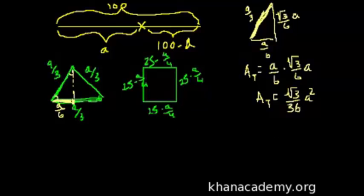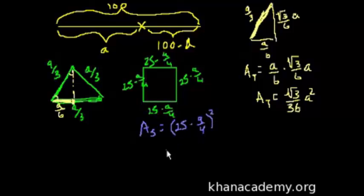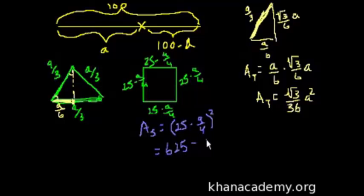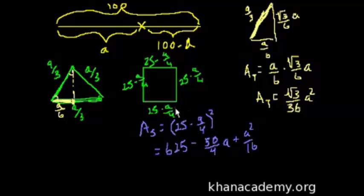And what's the area of the square? That's easier - that's just base times height. So the area of the square is equal to (25 minus a over 4) squared, which expands to 625 minus 50a over 4 plus a squared over 16. So that's the area of the square.